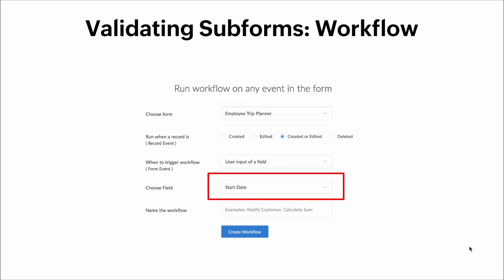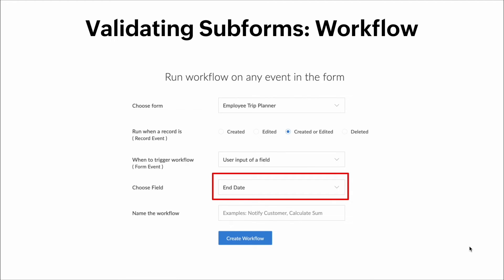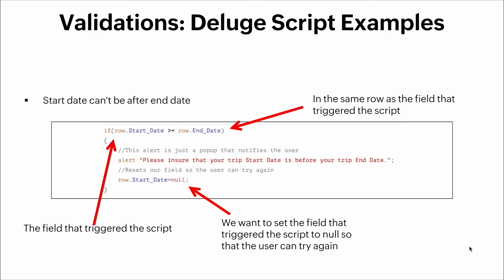Here's how we create the workflows. We choose the form name, tell it to trigger when the record is created or edited, set the trigger to fire on user input of a field, and the field we choose is the start date. For the second workflow we choose a different field name: end date.